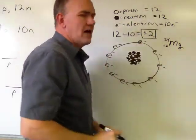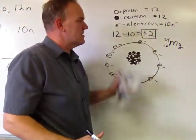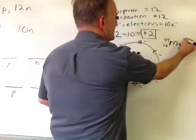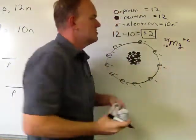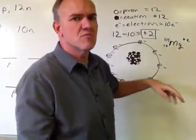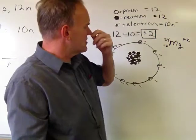So this actually has a charge. This atom has a charge, and therefore we know we would call it an ion. It's an ion, and its charge is plus 2. This is actually why ions have charges. It's because of an imbalance between protons and electrons.